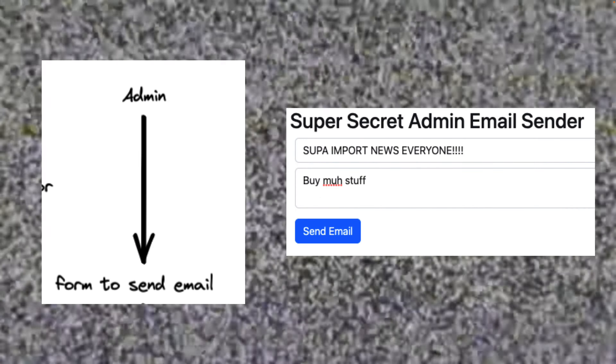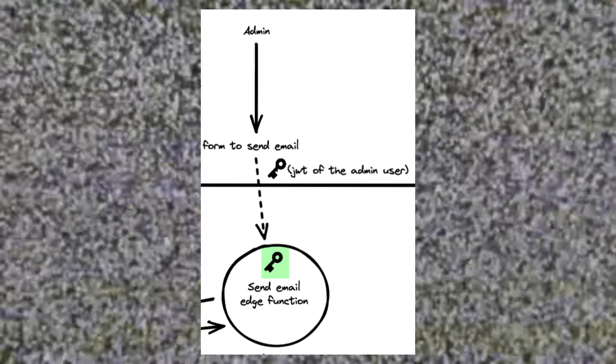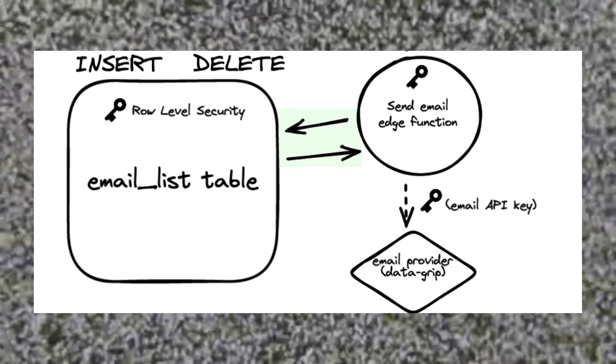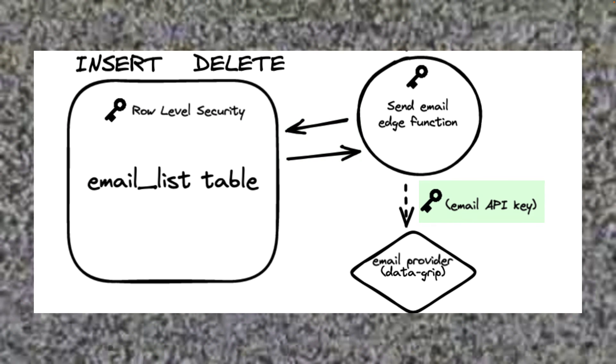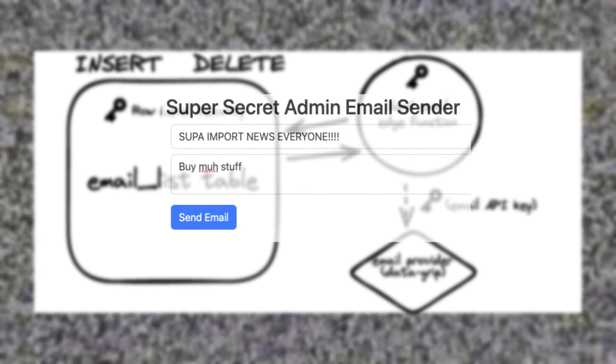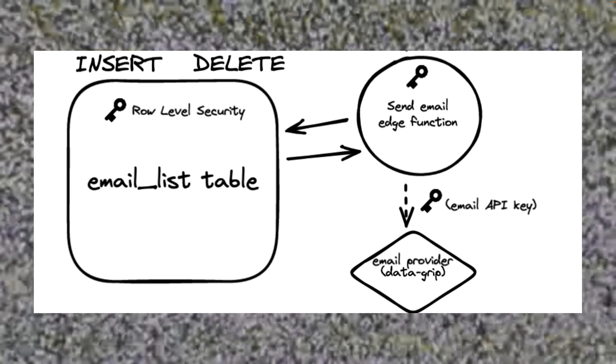Next up for the admin, this is to send out emails. The admin will see a form to send an email. When the admin submits this form, they're going to send a request to an edge function that we'll set up called send email. Very importantly, notice that in the header of this request, we're going to send the JWT - that's the JavaScript web token of the admin user. We'll validate that first thing inside of the edge function, which will make sure only the admin can perform this operation. Then the edge function is going to get the information from our email list and use an API key for our email provider to send a request with the email data - data from our form as well as our email list - and the email provider will take care of things from there.